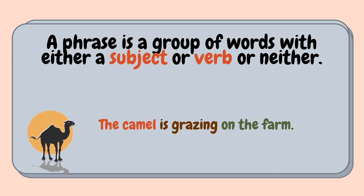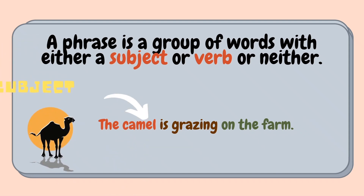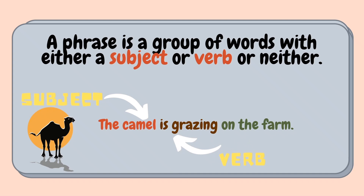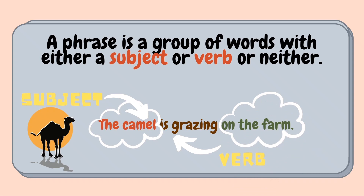Take the sentence: 'The camel is grazing on the farm.' Your subject is 'the camel' and your verb is 'is grazing.' So in this sentence, the phrase could be 'the camel is grazing' or 'on the farm.'